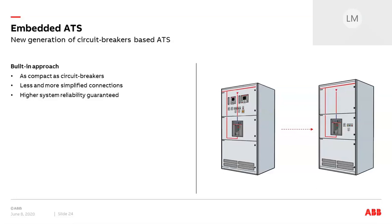This built-in approach, combined with the high computing power and capabilities of the Ekip trip units, represents a distinctive feature of EMAX2 in the market. Thanks to these integrated capabilities, the embedded ATS solution can be as compact as EMAX2 is — nothing more is needed — meaning space savings in the electrical installation as well as fewer and simplified connections. Less components also imply higher system reliability, which is further increased by EMAX2 circuit breakers that can be equipped with protection trip units that periodically check the continuity of connections and the presence of faulty conditions.